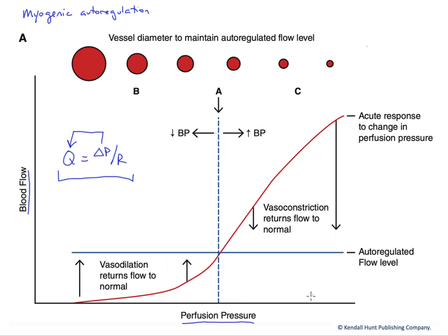Now, this is not the only factor affecting and regulating blood flow through a particular tissue. We certainly want to also match blood flow to metabolic need, but this myogenic effect will be overlaid on that. At point A, at a normal perfusion pressure, we will generate a normal or autoregulated amount of blood flow — that is, meeting metabolic needs at that moment.